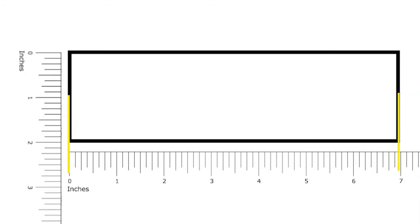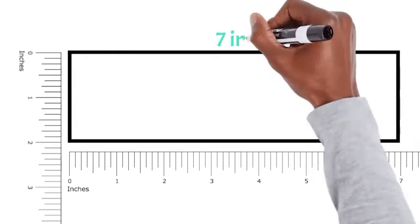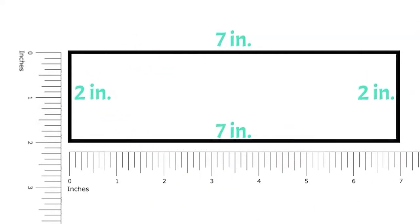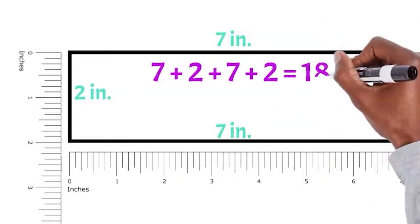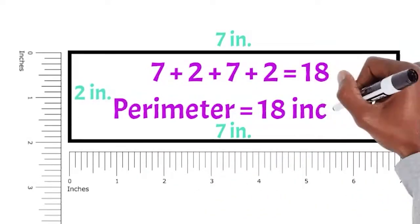So we still need to find the perimeter. How do we do that again? Let's add up all four sides, which is the same as adding the length and width twice. Seven plus two plus seven plus two equals 18 inches. Perfect.